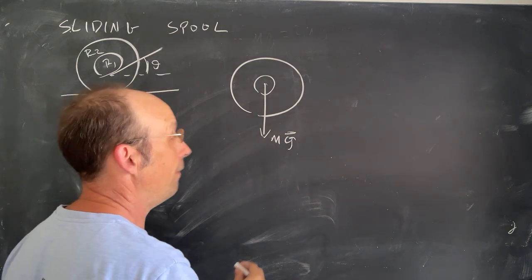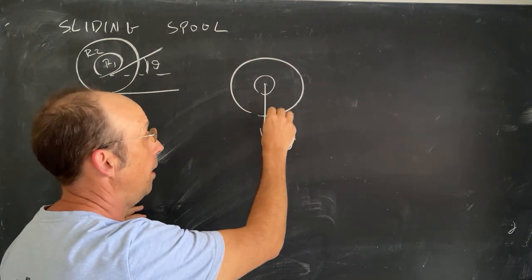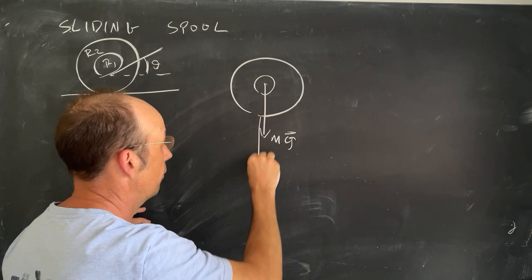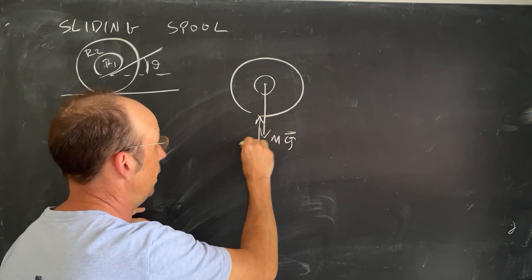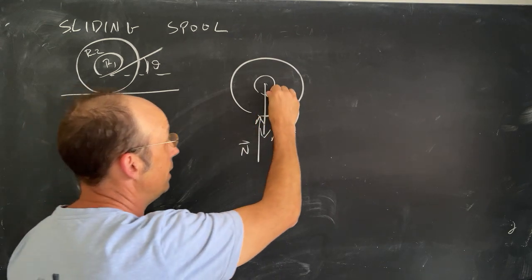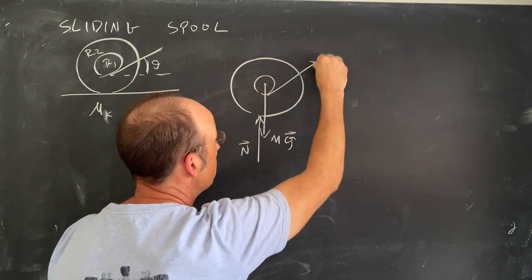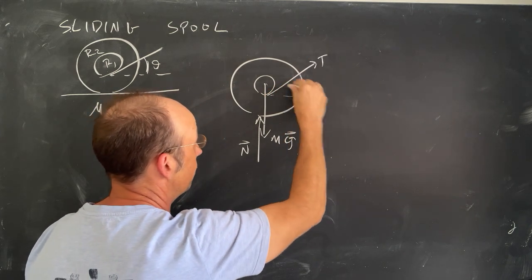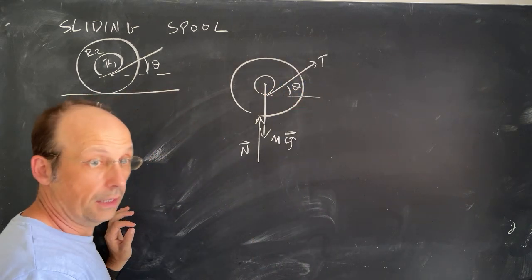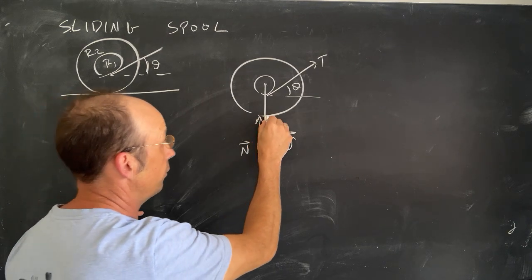And then I have the normal force. And the normal force pushes up right there. It's kind of hard to draw in. And then I have the tension, like that. And this is at some angle theta. And then finally, I have a frictional force. I'll put it right here.